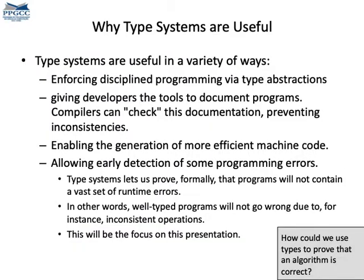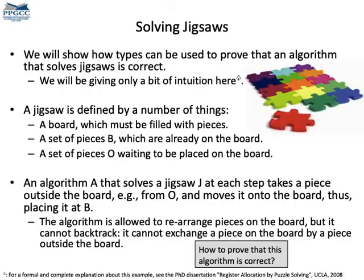But how are types useful in the narrower context of programming languages? They are useful in many ways, but all these many ways boil down to the following: types prevent expressions that do not make sense, like summing a boolean and a string. So even though it's syntactically valid to write an expression that adds up booleans and strings, this program does not really make sense.